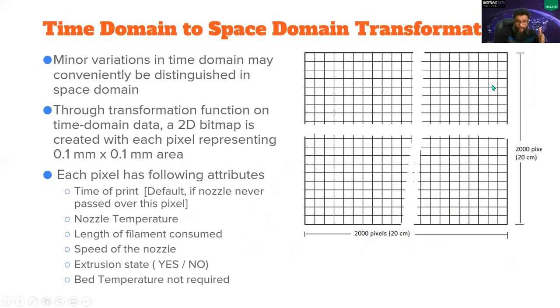So after transformation, each pixel is also represented by a set of attributes, pretty much like the time of print, the nozzle temperature, the length of the filament consumed, speed of the nozzle extrusion status, whether there was some material available on that pixel or not. The bed temperature is not required because we just have one sensor and to repeat the same value for all pixels does not make a lot of sense.